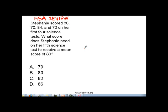Here's the problem. Stephanie scored 88, 70, 84, and 72 on her first four science tests. What score does Stephanie need on her fifth science test to receive a mean score of 80? Let's analyze the problem.